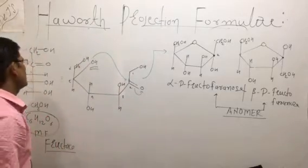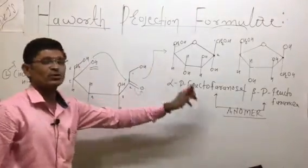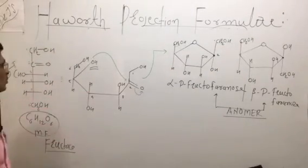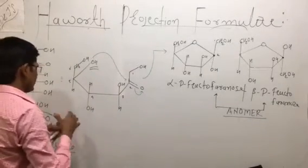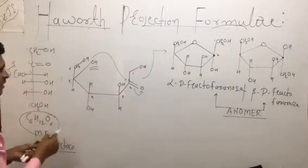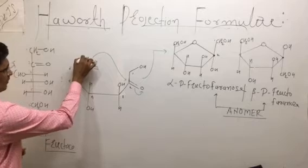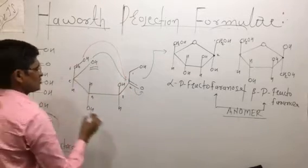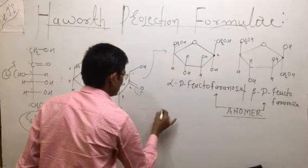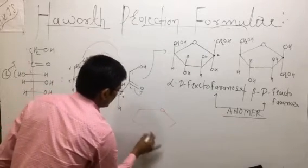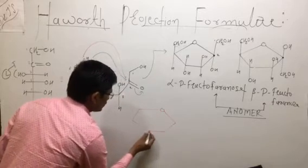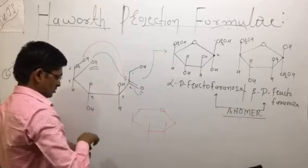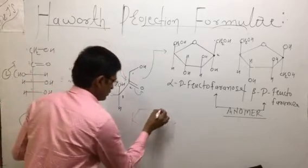So, this is the relation. These are the Haworth projection formulas of the fructose molecule. Now, this hydroxy group — we have to attack. This is the lone pair of electrons. Now, we have to attack carbon 1, 2, 3, 4, 5, and form a 6-member ring. So that is nothing but a reducing sugar. Now there is formation of a 6-member ring. So we have to make a 6-member ring — there is a generation of a 6-member ring.